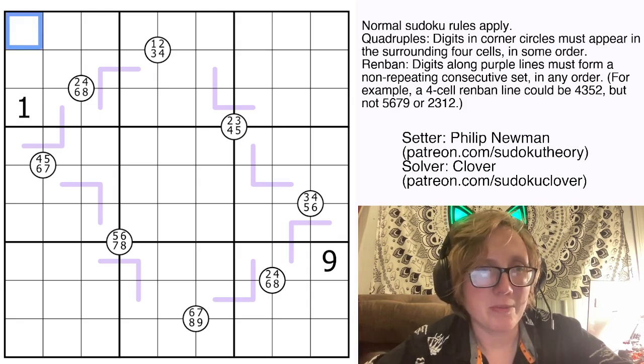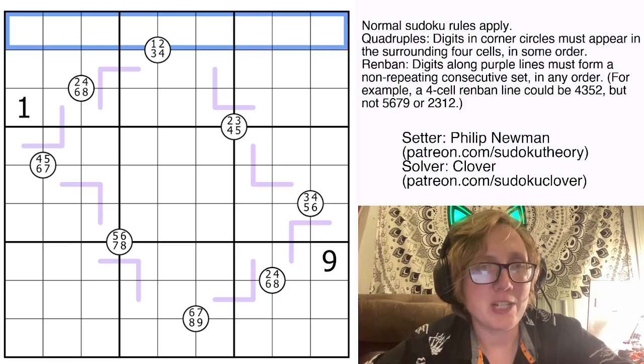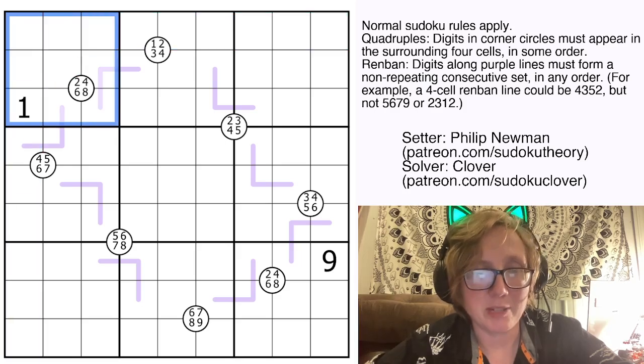We have standard Sudoku rules, so we're placing the digits 1 through 9 once each in each row, each column, and each outlined 3x3 region.